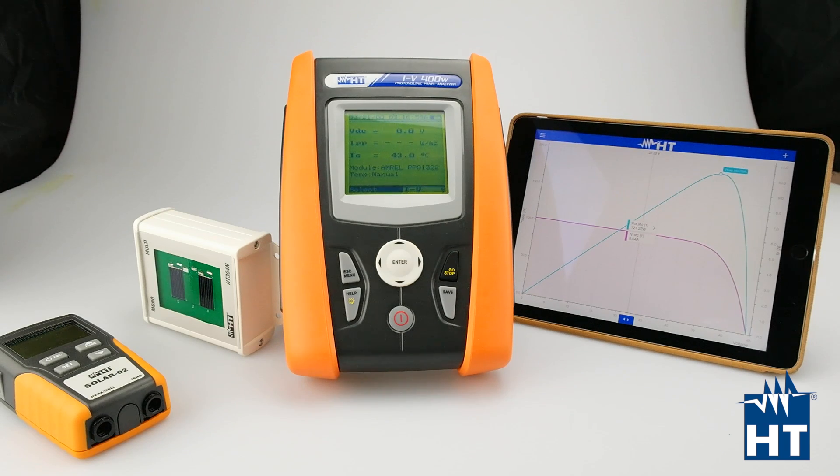As you can see here, there is an iPad with our app, which is called HT Analysis. With that app, you can download the data via Wi-Fi directly on the field. So you don't need to waste your time and you are not obligated to go again in the office to download the data. On the field, you can analyze everything about all the measurements that you've done.